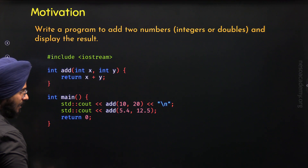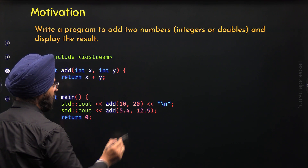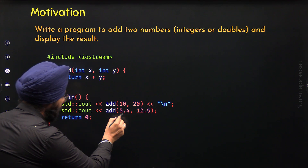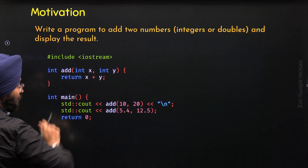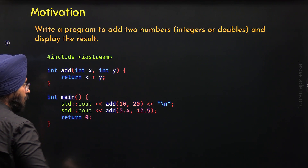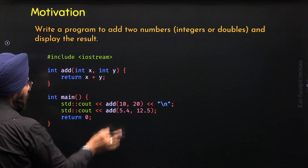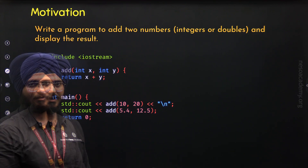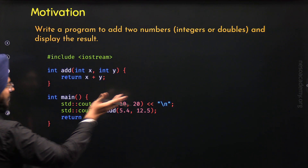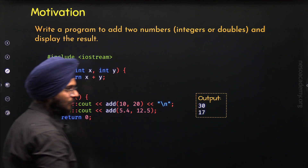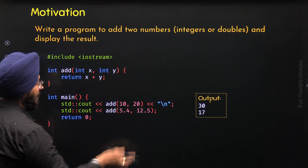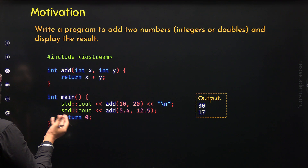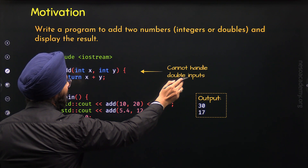Now what about this function call? Here we are calling this function with values 5.4 and 12.5 — these are double values, but we have integer parameters. Integer parameters can accept only integers, so x will receive 5 and y will receive 12. The 0.4 and 0.5 will be truncated. The result will be 17, not 17.9 which we were expecting. So clearly this function can handle integers, but it cannot handle double inputs — that's the problem.